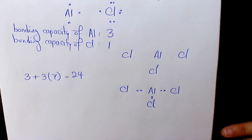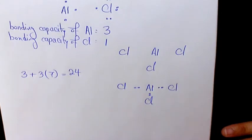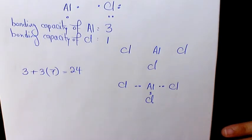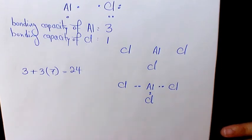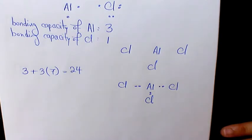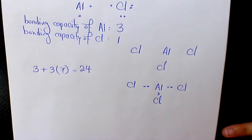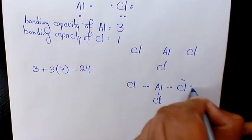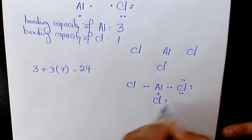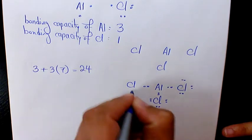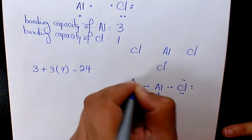And for the next step, I need to place pairs of the remaining valence electrons as lone pairs on the surrounding atoms, not the central atom — the surrounding atoms, which are the Chlorine. We need to follow the duet rule for hydrogen atoms and the octet rule for others. So we place the lone pairs for the surrounding atoms like that.